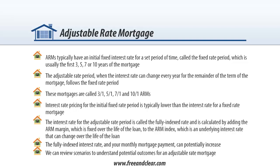The interest rate for the Adjustable Rate Period, which follows the Fixed Rate Period, is called the Fully Indexed Rate and is calculated by adding the ARM Margin, which is fixed over the life of the loan, to the ARM Index, which is an underlying interest rate that can change over the life of the loan. This means that the ARM interest rate and your monthly mortgage payment can change and potentially go up over the life of the mortgage.